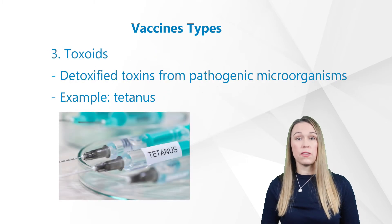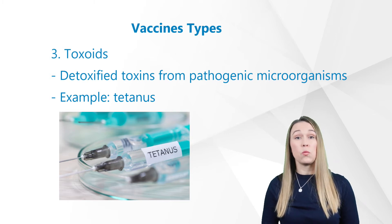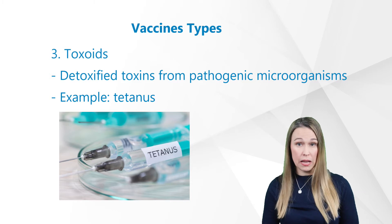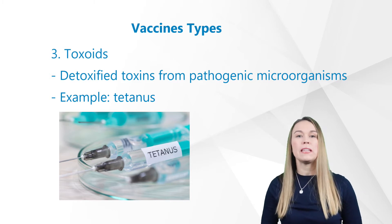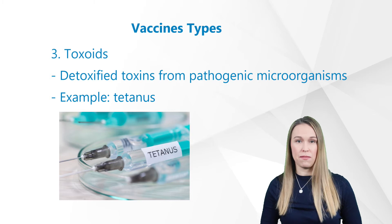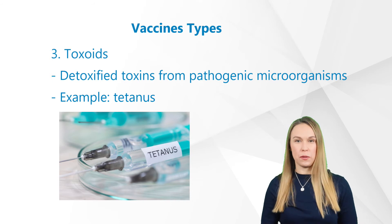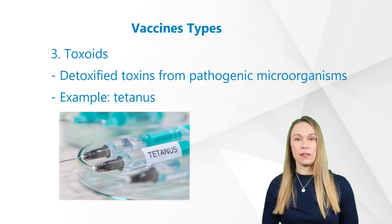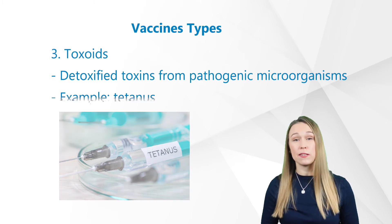Toxoids are detoxified toxins from pathogenic microorganisms. These vaccines are used in cases in which it's not the pathogens themselves, but — as in tetanus and diphtheria — mainly their toxins that cause the symptoms of the disease. Toxoid vaccines are known for their efficacy. Not all toxoids are from microorganisms; for example, Crotalus atrox toxoid is used to vaccinate dogs against rattlesnake bites.